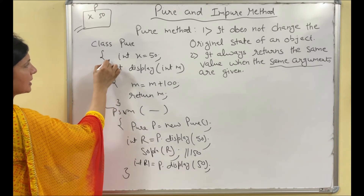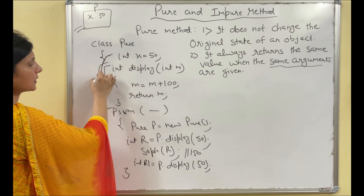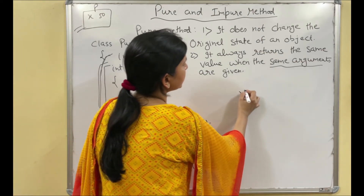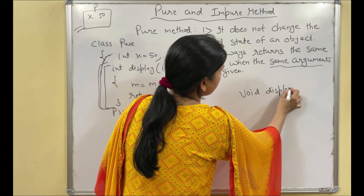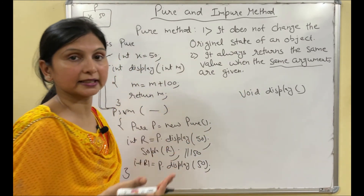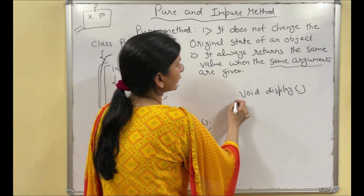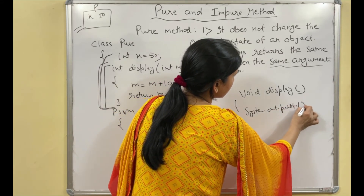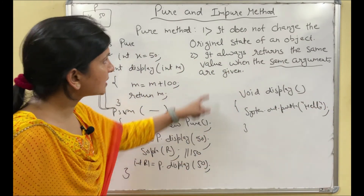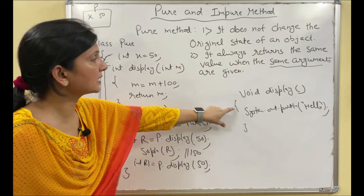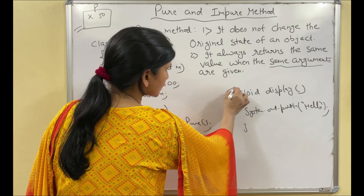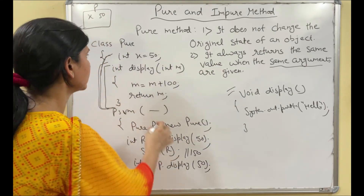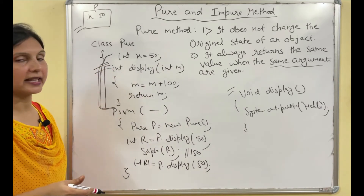For the example of pure method, you can write the method int display(int m) with m equals m plus 100 and return m. Even a simple void display that just prints 'Hello' is also a pure method, because it does not change the original state of the object — x equals 50 remains intact. Pure methods have no side effects.